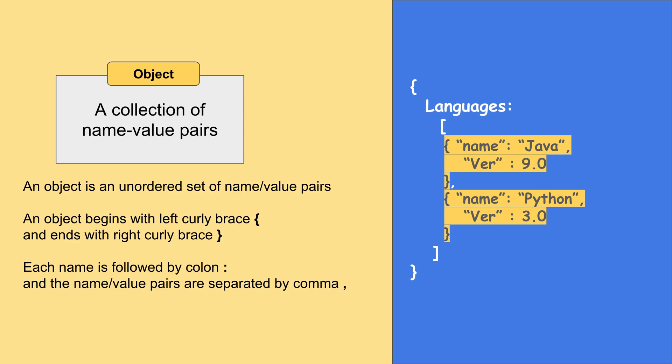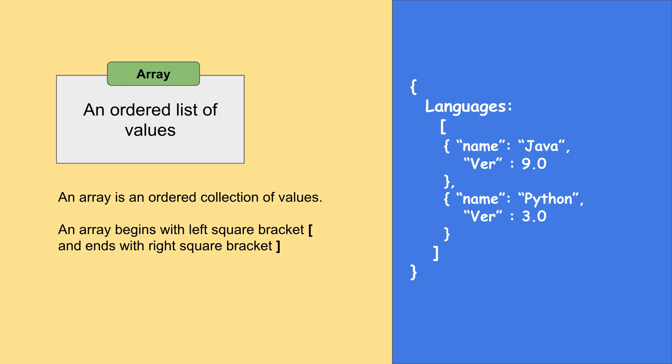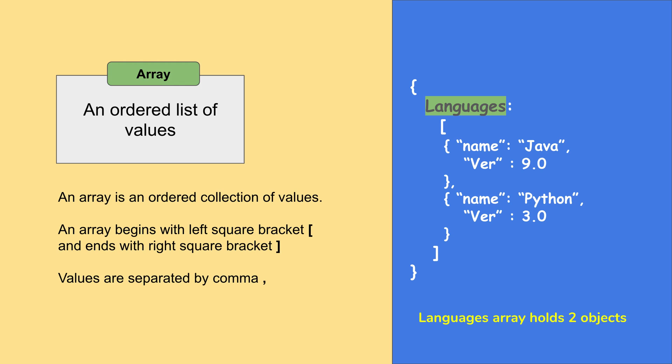An array is an ordered list of values. It begins and ends with a square bracket, and the values are separated by commas. In our example, 'languages' is an array — it starts and ends with a square bracket. We have a single array in this JSON, and the languages array holds two objects. If we had multiple arrays, we would add a comma after the closing square bracket.